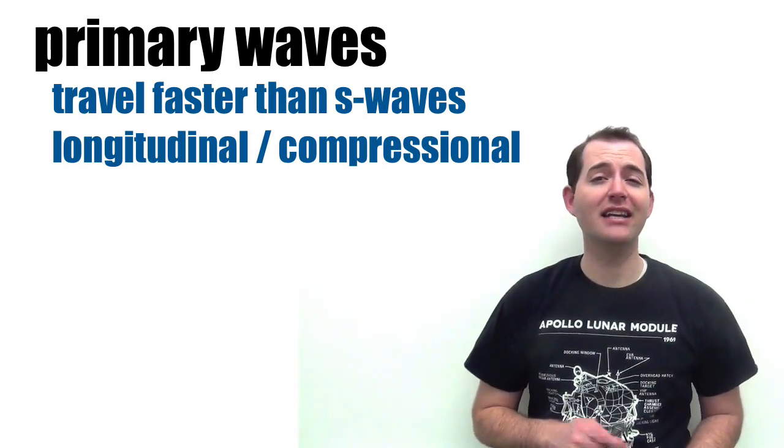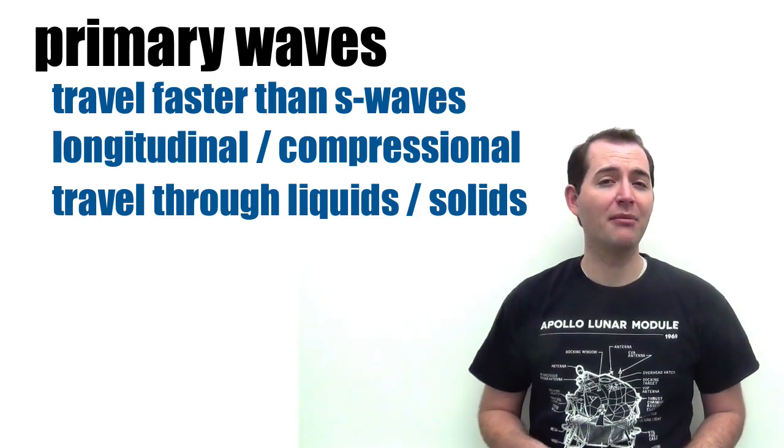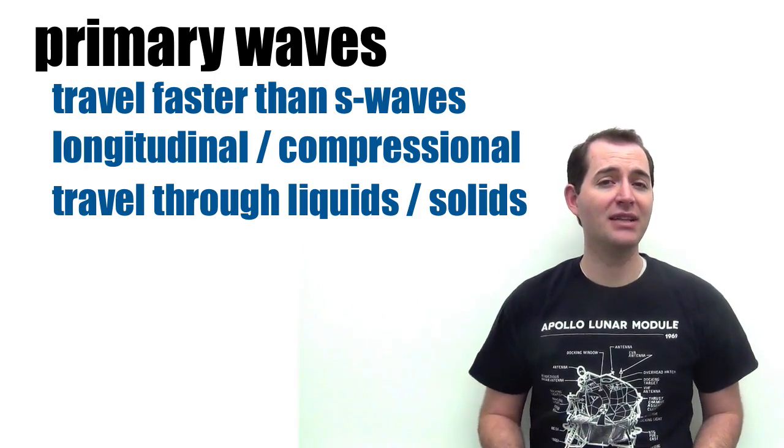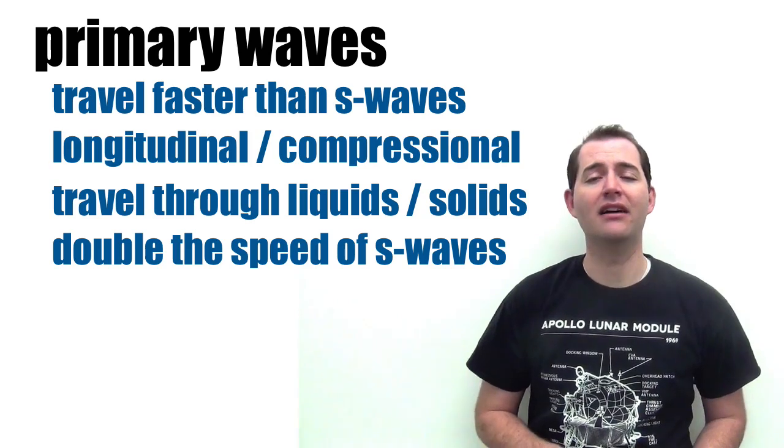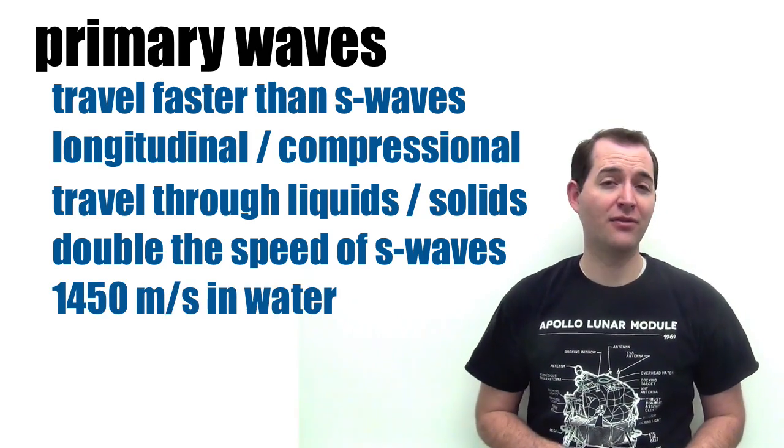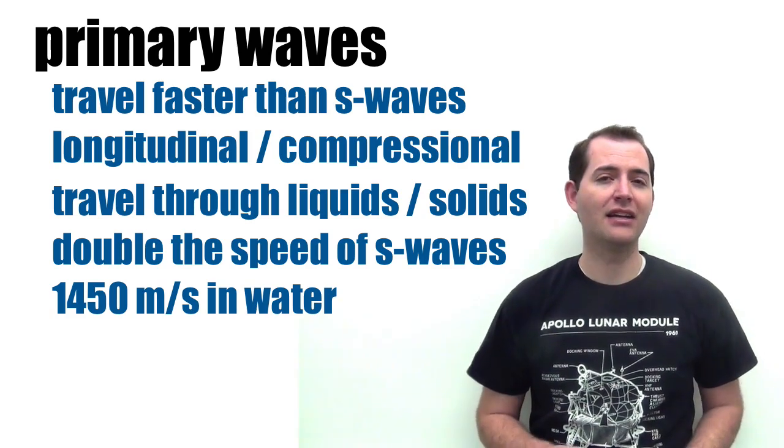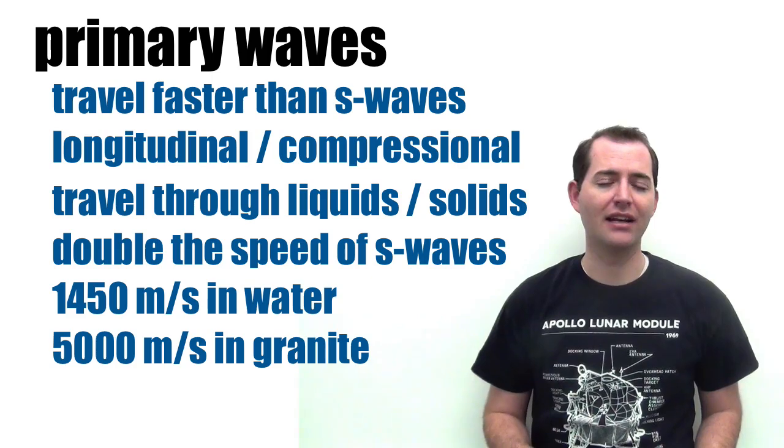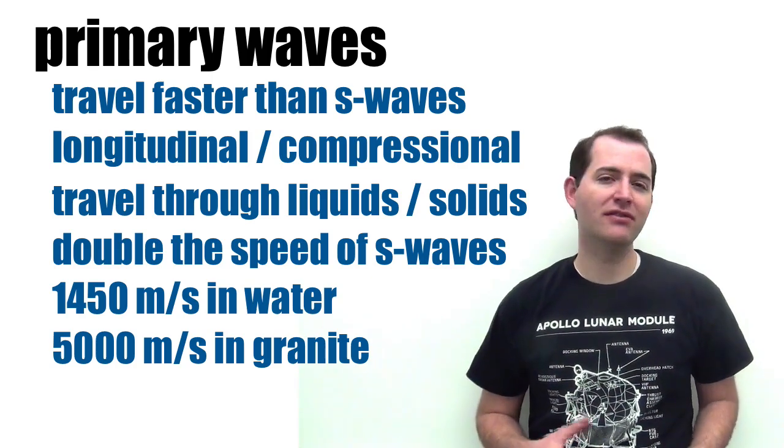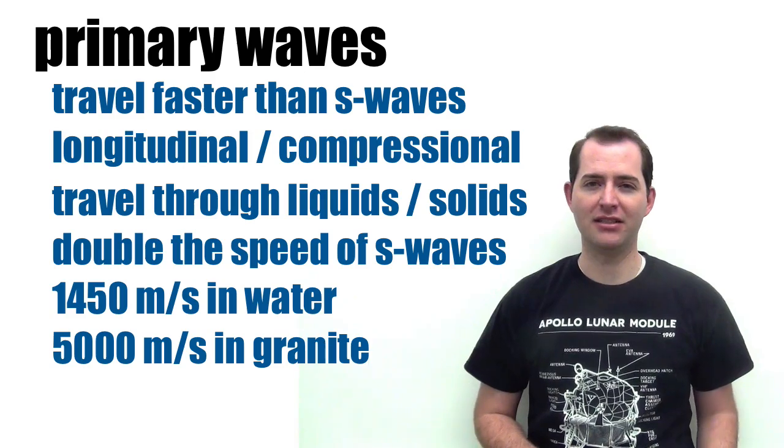Longitudinal waves are unique in that they can travel through both liquids and solids, and primary waves in particular have a speed that is almost double that of secondary waves. And they travel at a velocity of 1,450 meters per second in water, and about 5,000 meters per second in granite. So we can see that they travel faster through solid materials than they do through liquid materials.